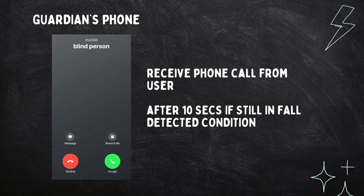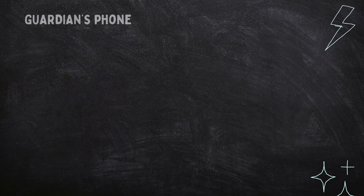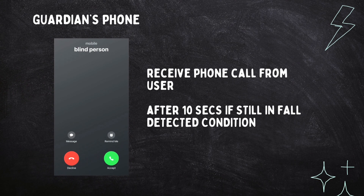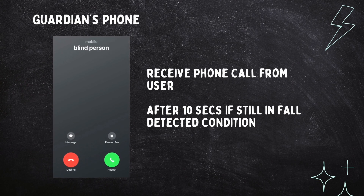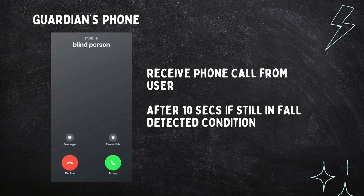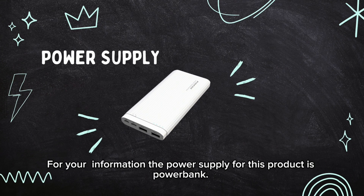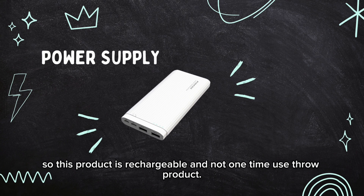This means the visually impaired person is in danger. This is a highly safe and useful app created for the Maneuvering Assistant for Visually Impaired Person with Automated Alert System. The power supply for this product is a power bank, so this product is rechargeable and not a one-time-use product.